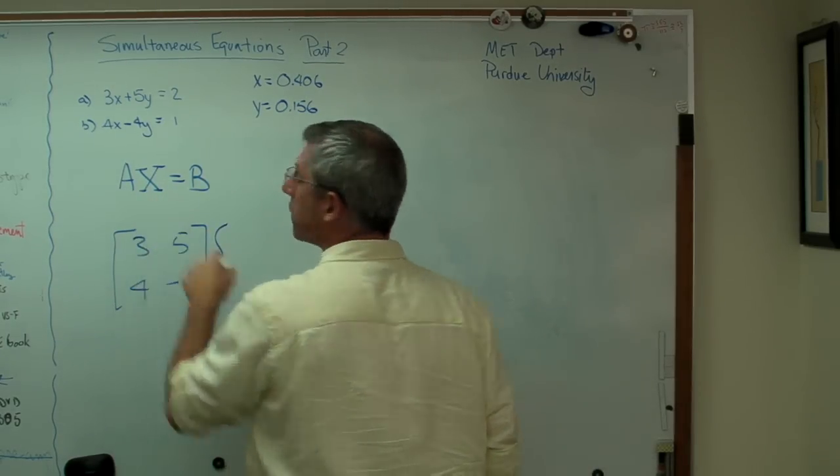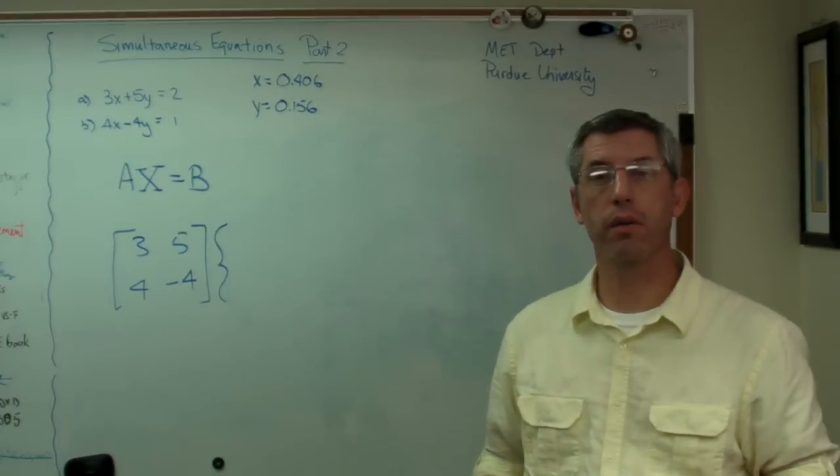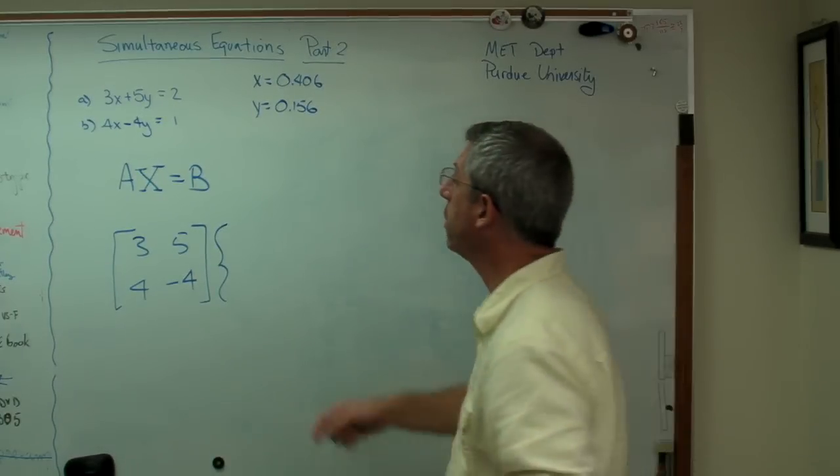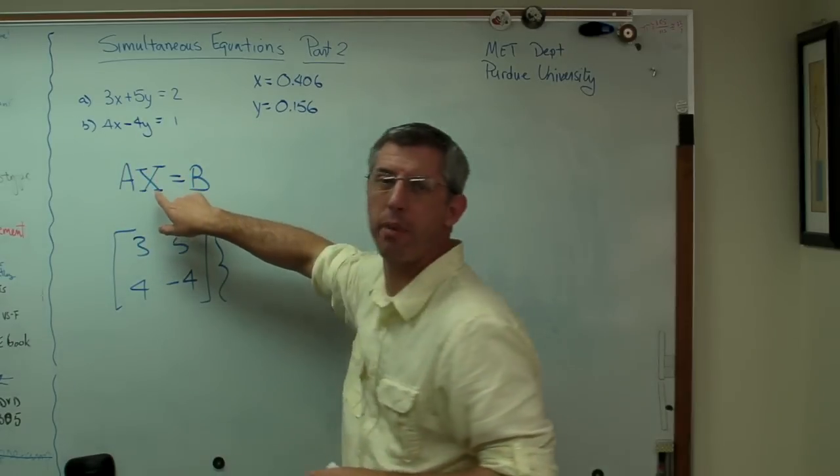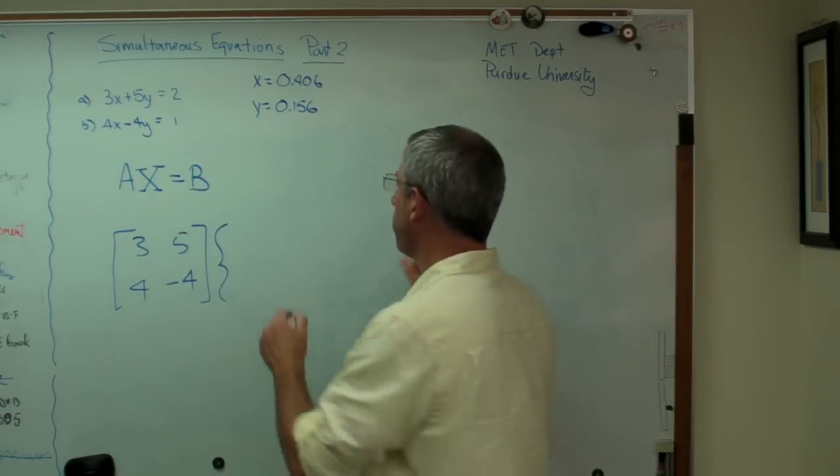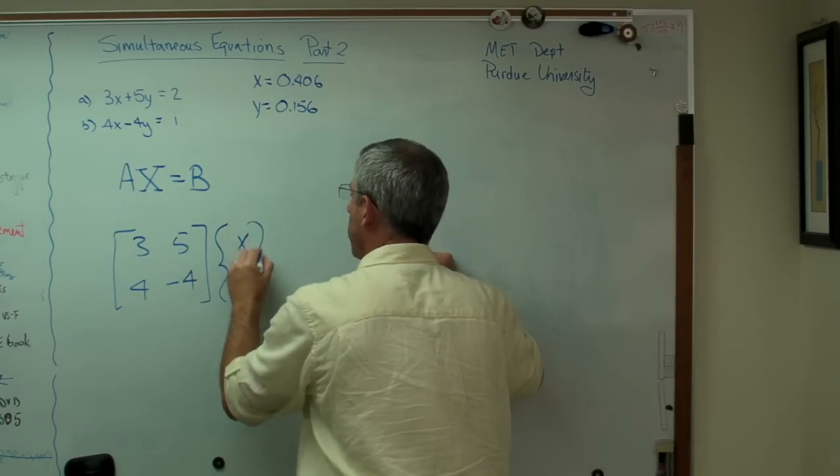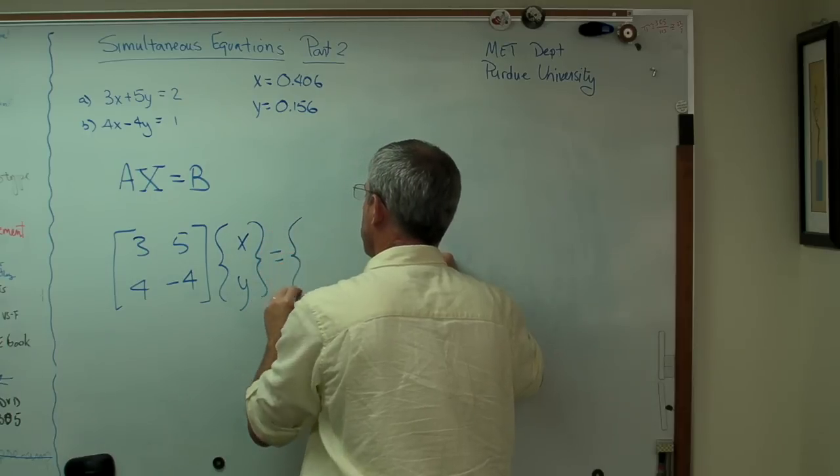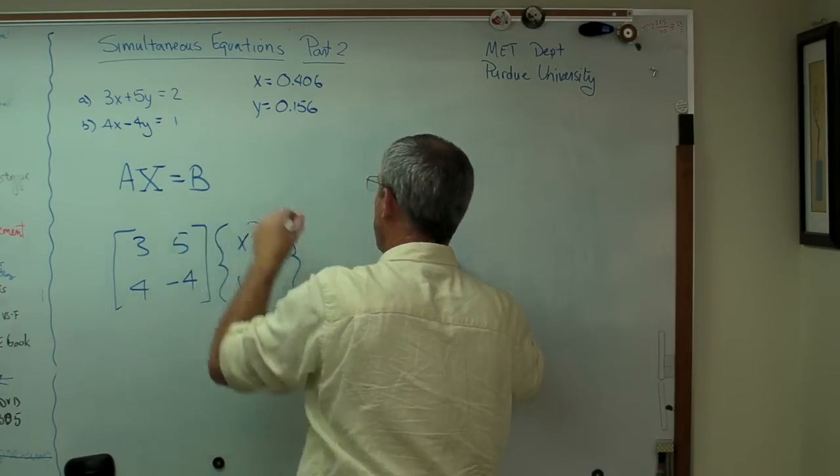This capital X is the vector of all my unknowns. My unknowns here are x and y. That's why I use capital X - I didn't want to get confused with the little x and the little y there. So that's x and y. And this is equal to another vector that's 2 and 1.